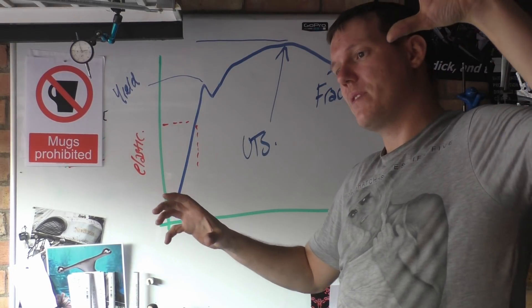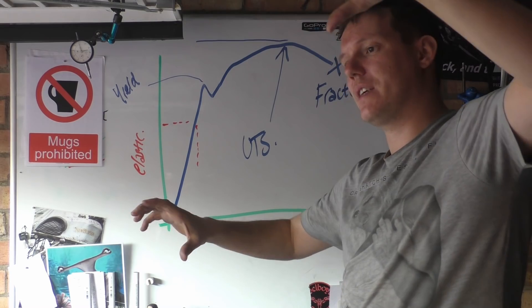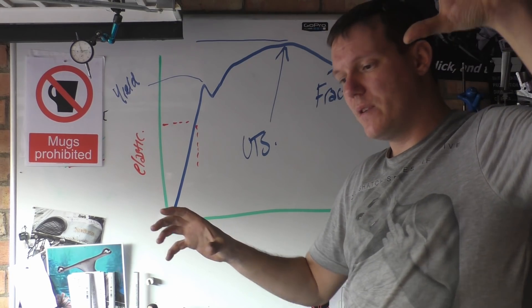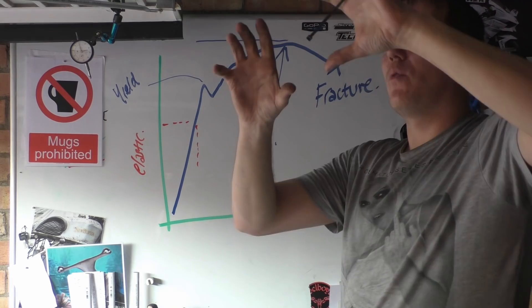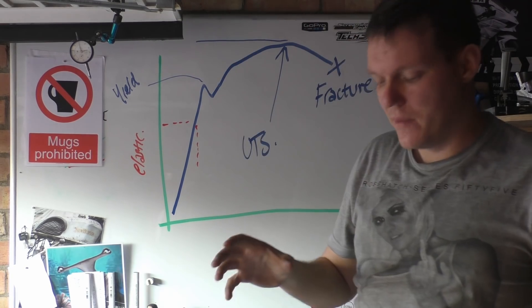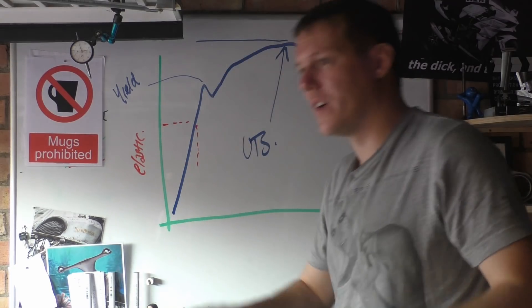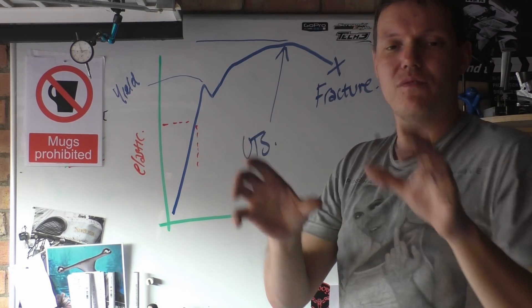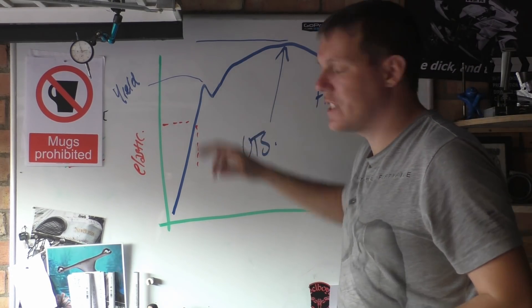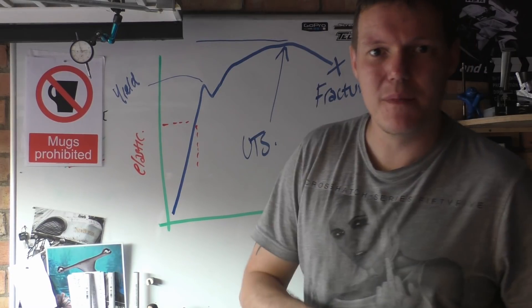It can bend and then it can flex back. If we go too far, what happens is you get, in a sense, slip. The structure inside, instead of just bending over, it basically goes, and now it's reformed. That's your yield point. That's plastic deformation. It now won't return to its original shape, and it is now that shape for good.